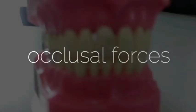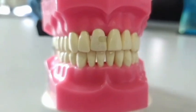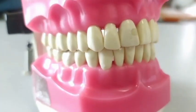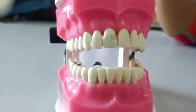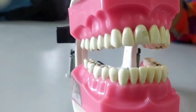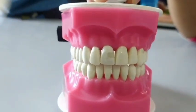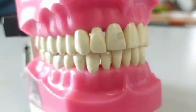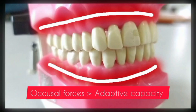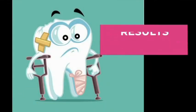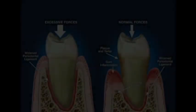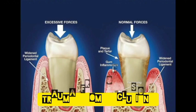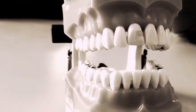Trauma from occlusion. Occlusal force is nothing but a force which is exerted on the opposing teeth when you just clench your teeth. When this occlusal force exceeds the adaptive capacities of the supporting tissues, injuries result. This injury is called trauma from occlusion, and the occlusion causing these injuries is called traumatic occlusion.